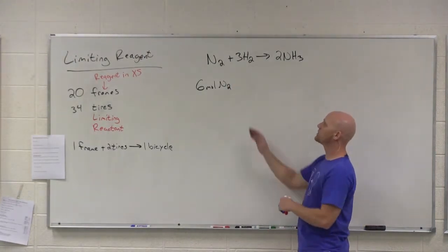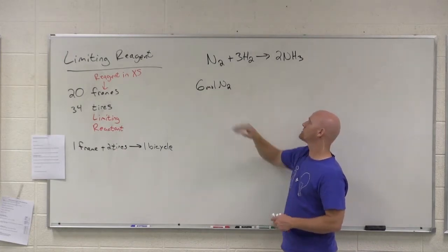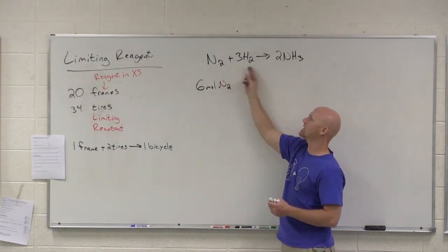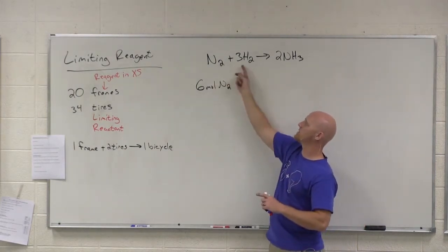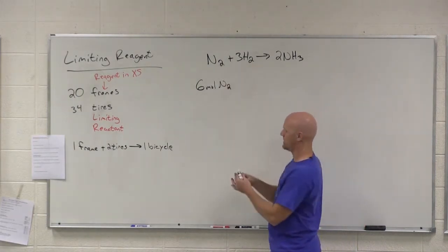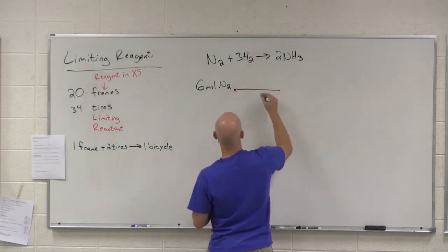So if I have six moles of nitrogen, do I need more or less moles of hydrogen for this to react completely? More. In fact, how many times more? Not six times more. What's the ratio here? Three times more. It's a three to one ratio.